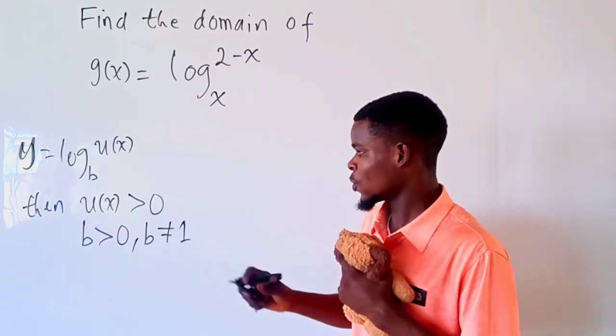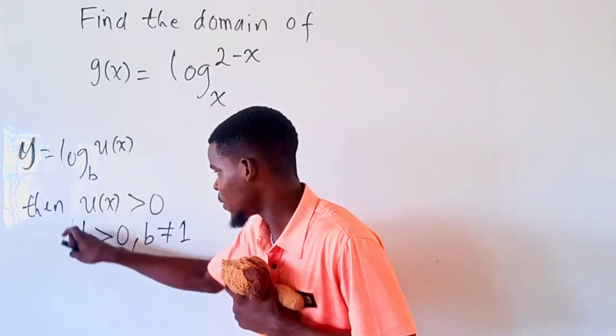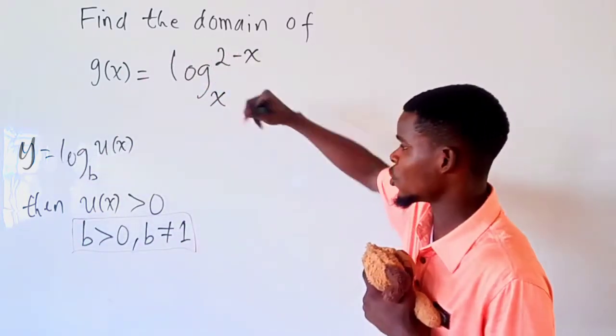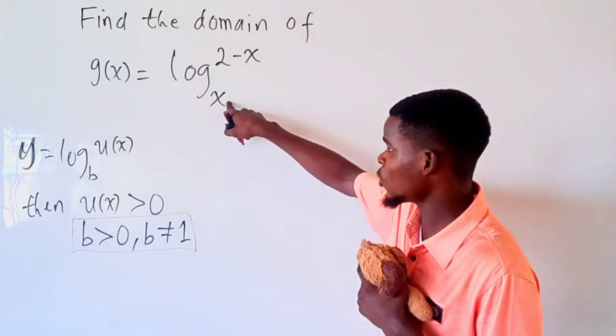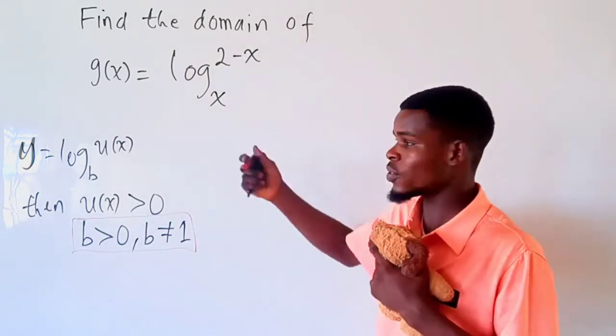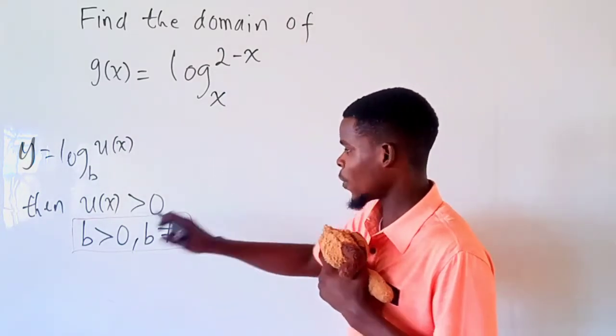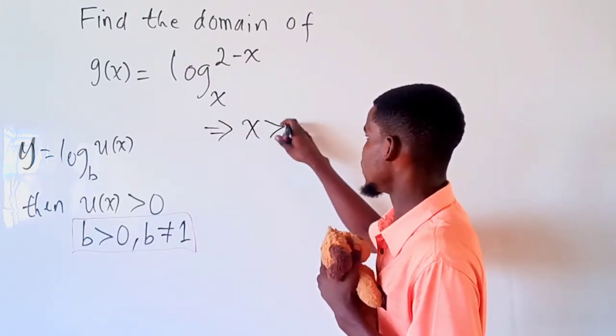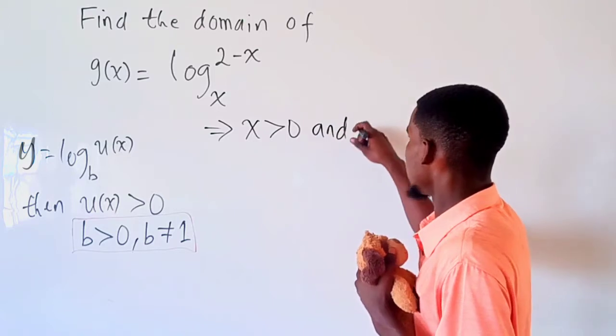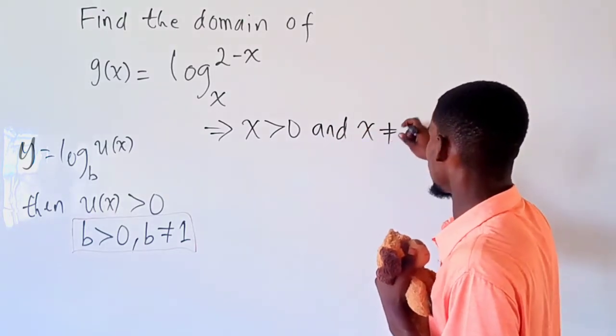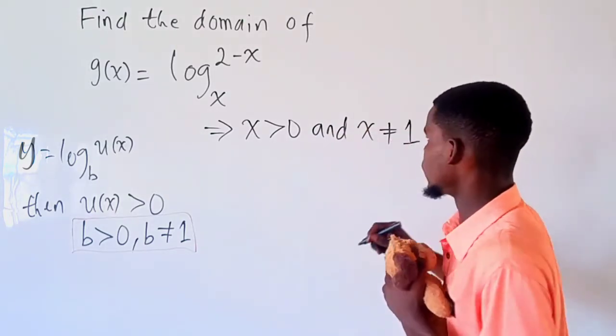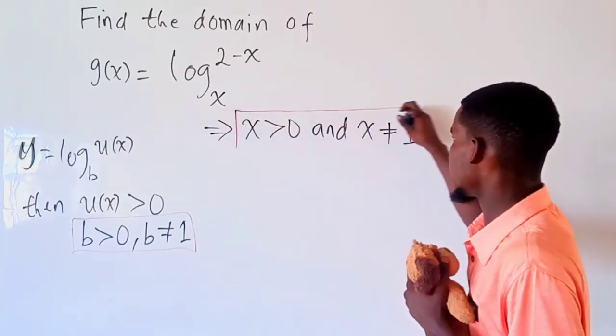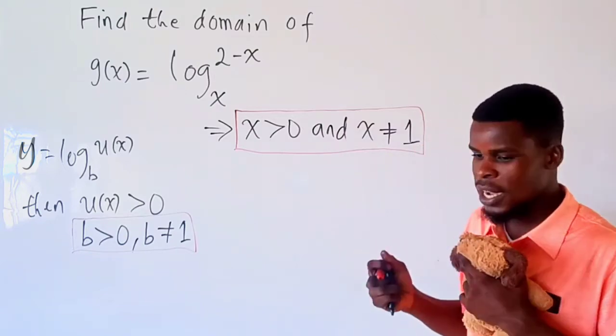So using this restriction for the base, if we compare this with that given function, you will notice that in the position of the base x is there. So that simply tells us from this fact that x should be greater than zero and x should not be equal to one.